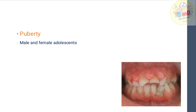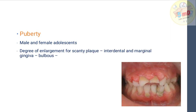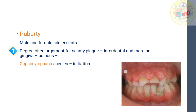Puberty is also a cause for conditioned gingival enlargement in both male and female adolescents. The degree of enlargement is disproportionate to the amount of plaque; the interdental and marginal gingiva becomes bulbous. Capnocytophaga species causes the initiation of puberty-induced gingival enlargement, and increased Prevotella intermedia and Prevotella nigrescens is also seen.